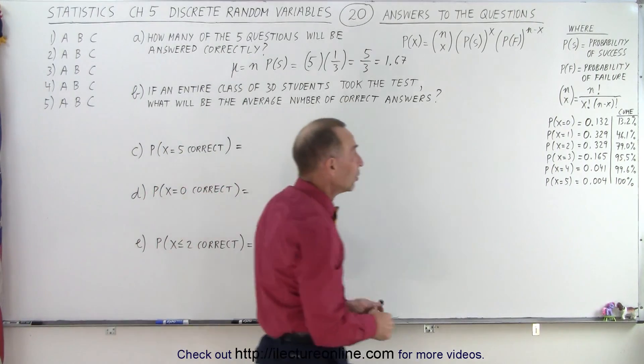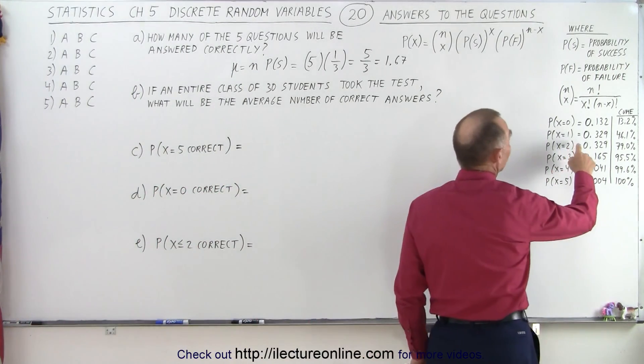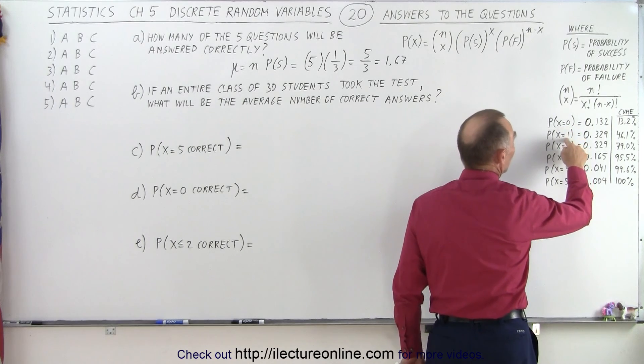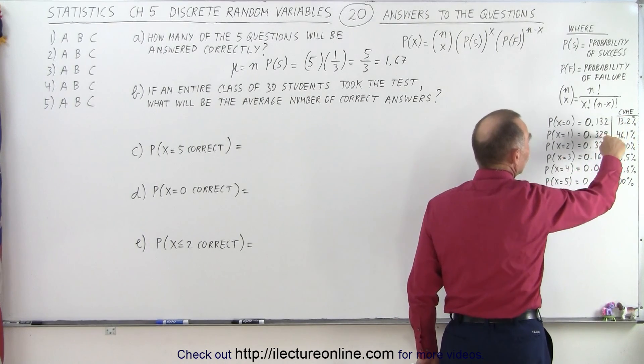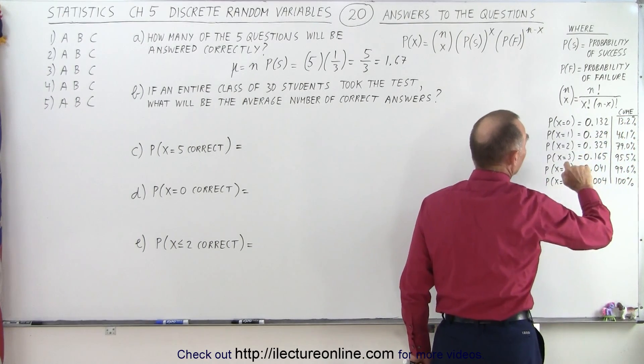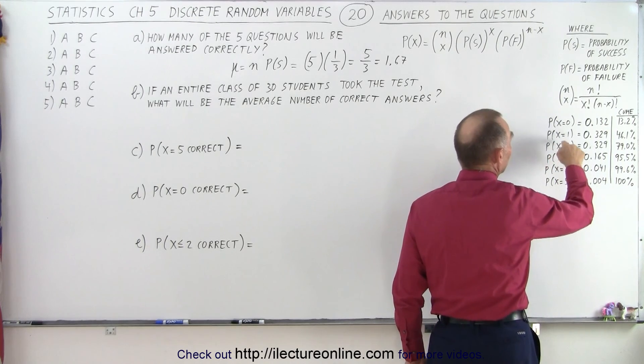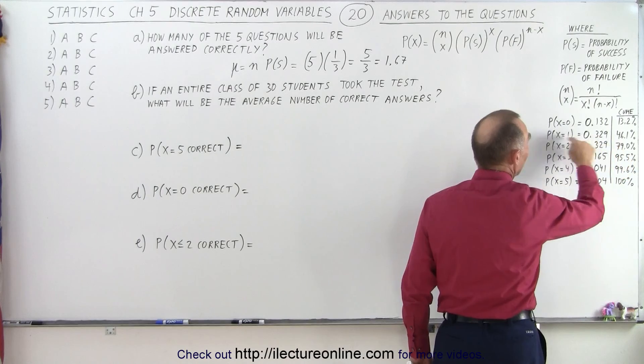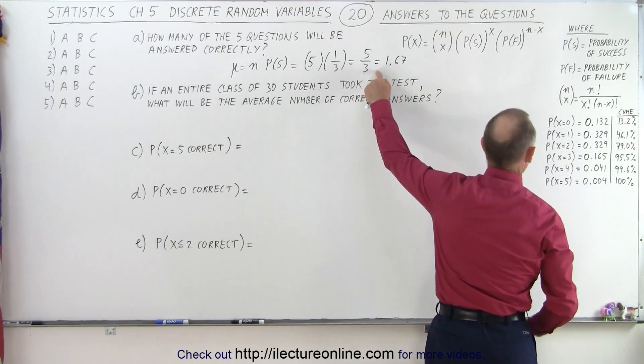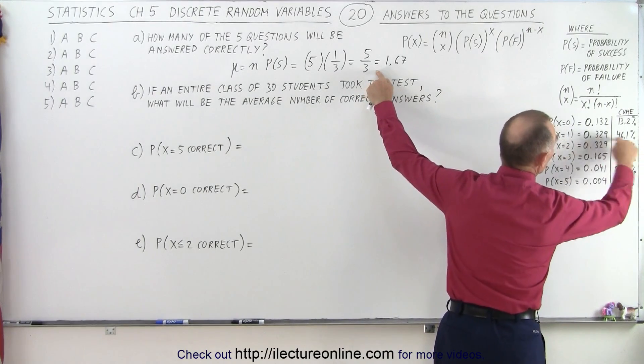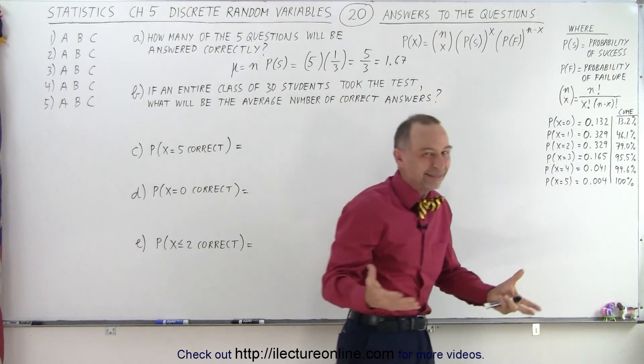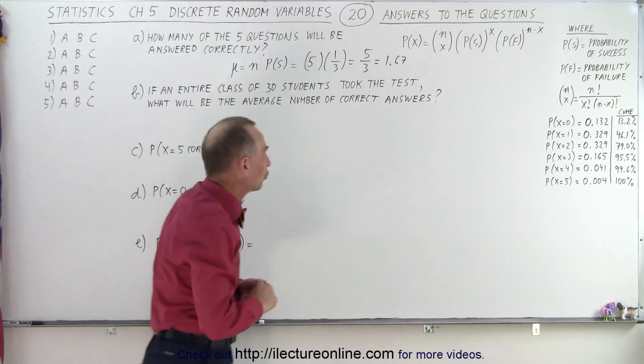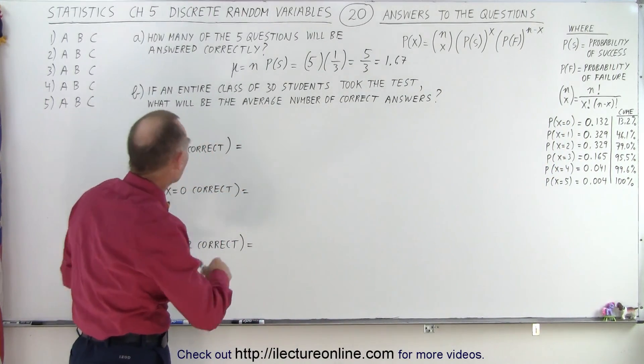Alright. Now if we take a look over here, notice that the probability of getting 0 or 1 question correct, we add up those two percentages, that would be 46.1%. And notice that the probability of getting 0, 1 or 2 questions correct is 79%. And notice that the answer to the first question here is right in between those two numbers. So that seems to make sense that it's somewhere between 1 or 2 most likely.